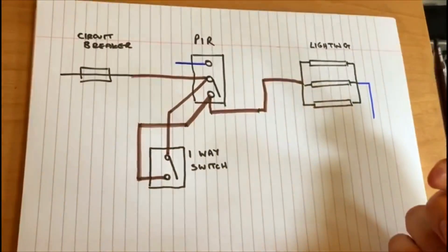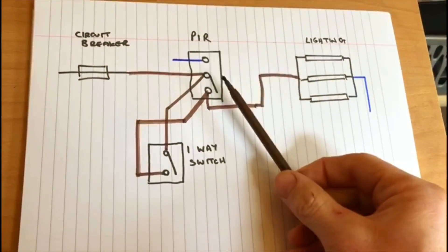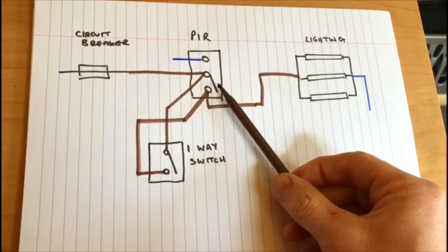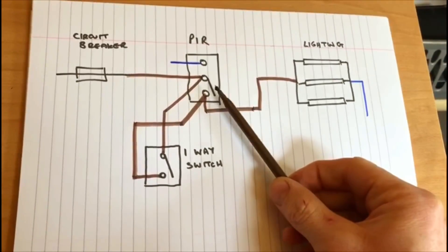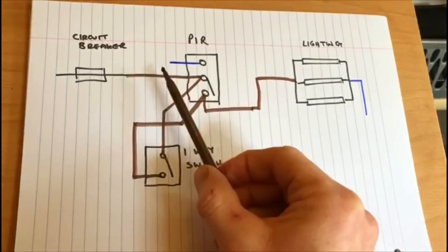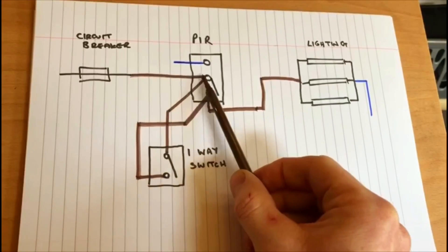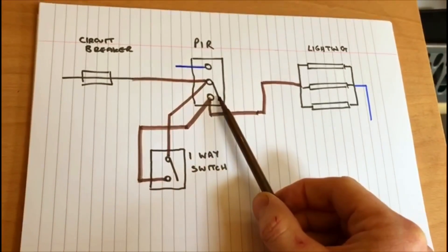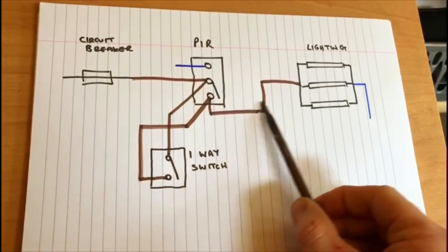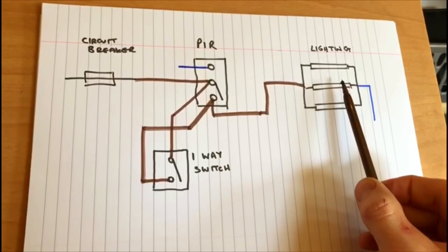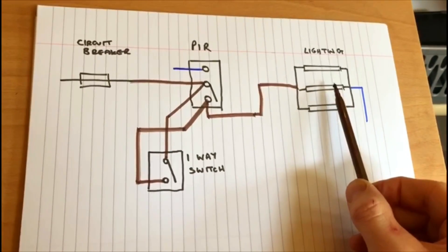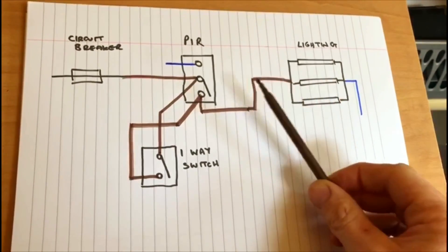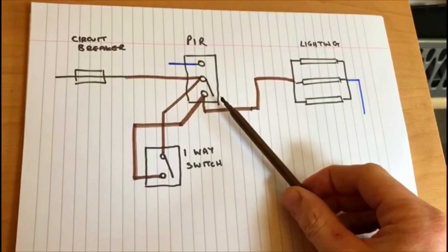So this can now work in one of two ways. You can have the normal PIR operating, so in this position the PIR will be operating. As soon as heat is detected, the switch will close and so electricity will flow through here, through the switch, and to the lights, and the lights will turn on.